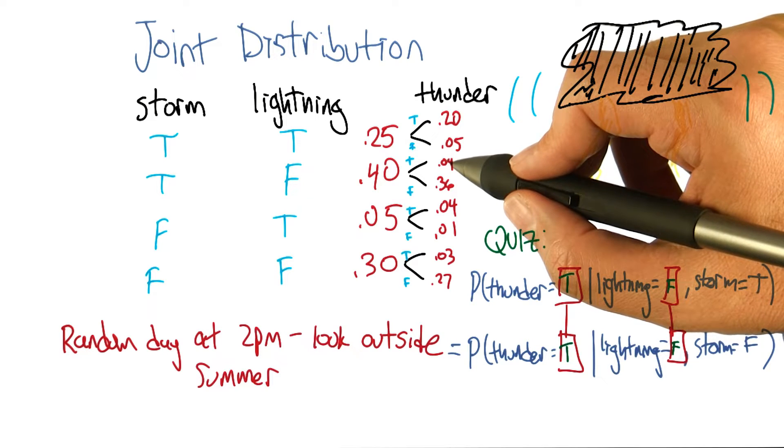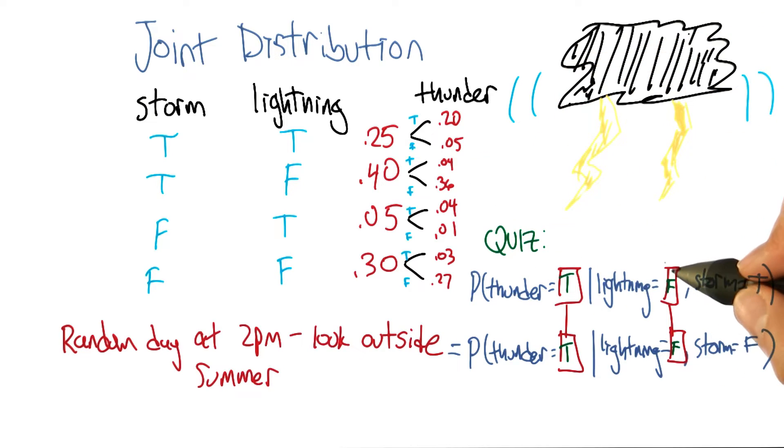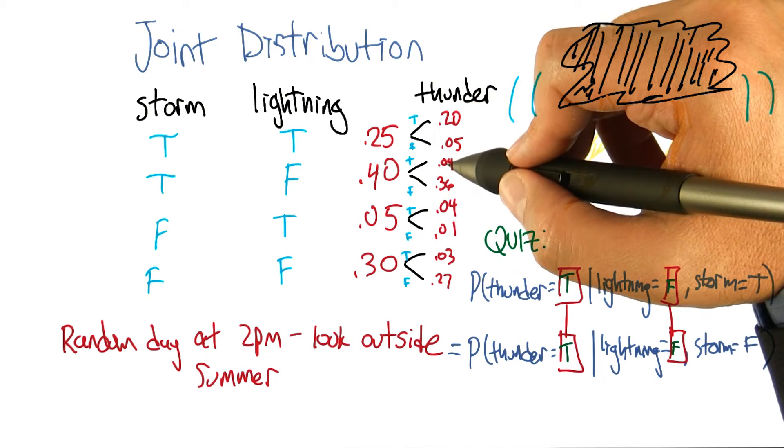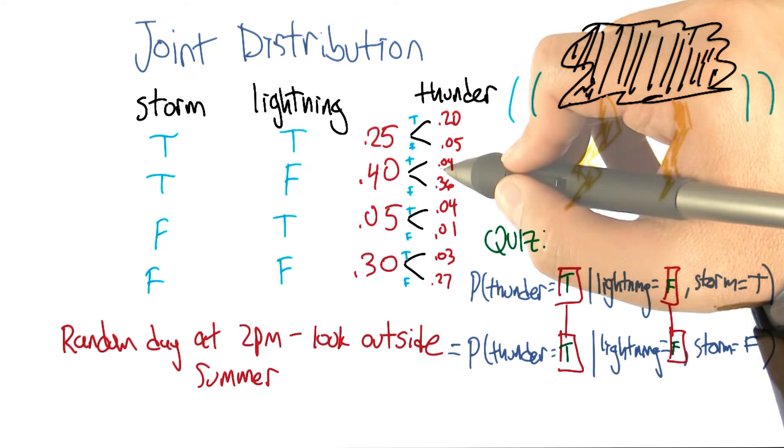So what's the probability that thunder is true, given that the other two things, lightning is false and storm is true. So that's going to be divided by the 0.4, that's the setting that we're in. Right, and 0.04 divided by 0.4 is 0.1.